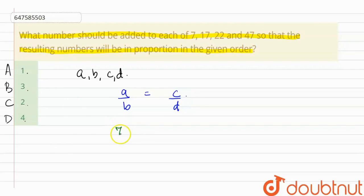We're given the numbers 7, 17, 22, and 47. If we put these numbers in this situation, we get that 7 by 17 equals 22 by 47.